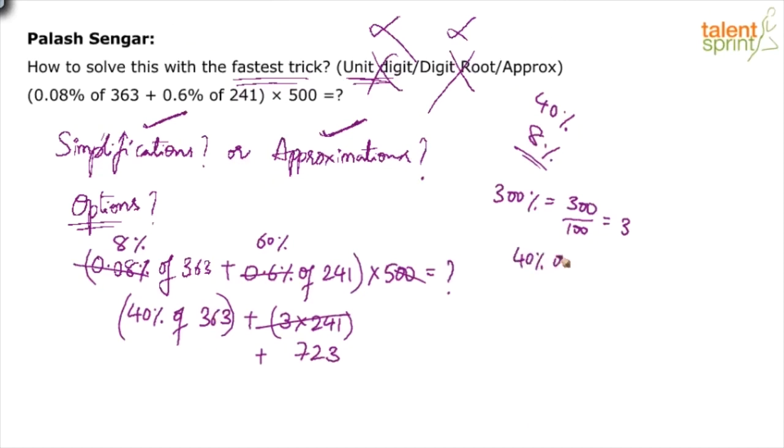40% of 360: 10% is 36, 36 into 4 is 144 plus 1.2, which is like 145.2. And now add to get the answer: 723 plus 100 is 823, 823 plus 48 is 863 plus 5 is 868 plus 0.2 is 868.2. You're done.